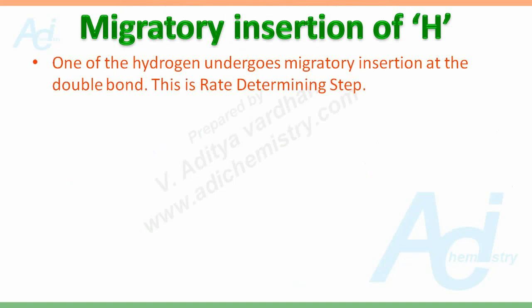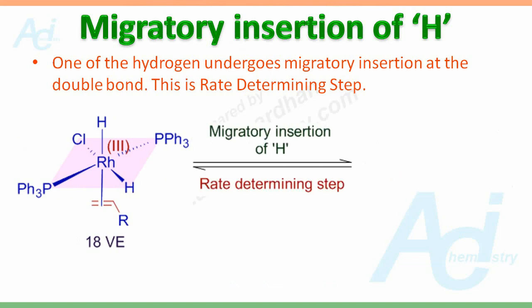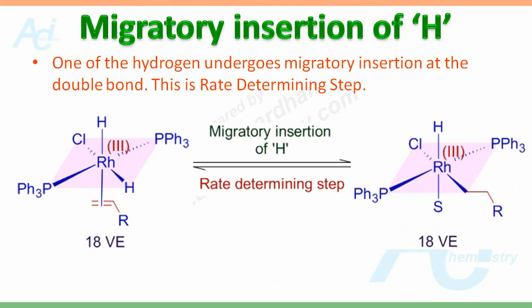The next step is the most important: migratory insertion of hydrogen. One of the hydrogens undergoes migratory insertion at the double bond. This is a slow step and hence rate determining.